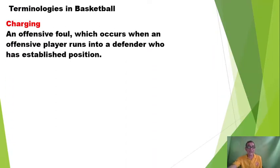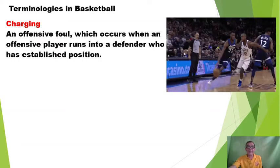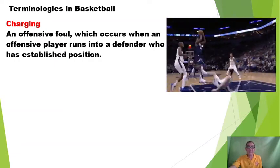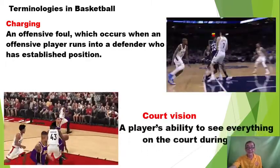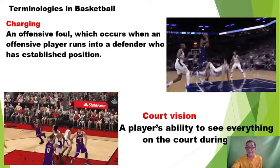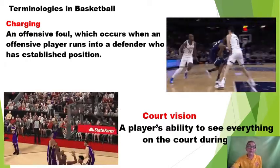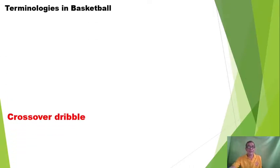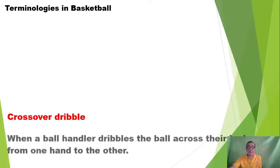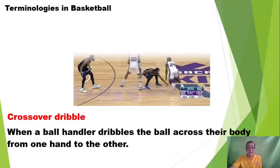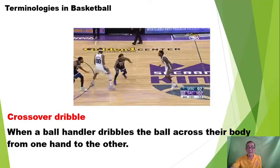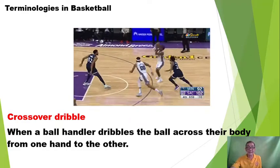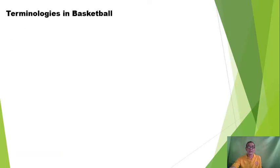The next one is charging — it is an offensive foul which occurs when an offensive player runs into a defender in an established position. And then court vision — you need to have the ability to see everything on the court during play. When you say crossover dribble, when a player dribbles the ball across their body from one hand to the other — that is what you call the crossover dribble.